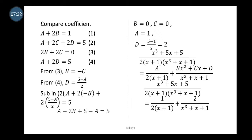Since B = 0 and B = −C, it means C = 0 as well. Substituting B = 0 and C = 0 into equation 1: A + 2(0) = 1, so A = 1. With A = 1, from D = (5 − A)/2 = (5 − 1)/2 = 4/2 = 2. So our complex fraction is now resolved as 1 over 2(x + 1) plus 2 over (x² + x + 1).